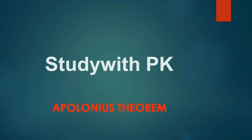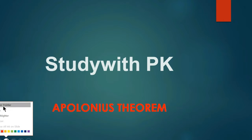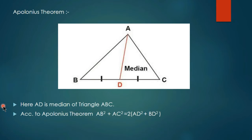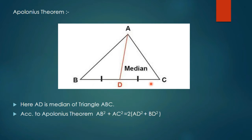Study with Peter. Today we are going to prove Apollonius theorem. Apollonius theorem is stated as: in a triangle ABC, if AD is a median, then according to Apollonius theorem, AB square plus AC square is equal to twice of AD square plus twice of BD square (or DC square).